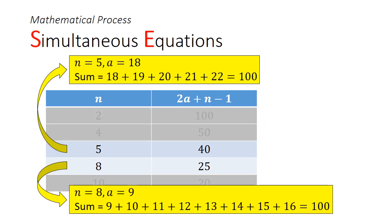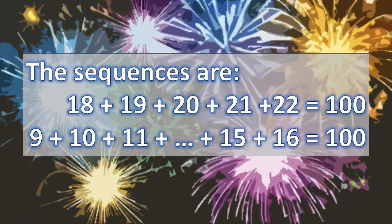So all that remains to be done is to solve the pair of simultaneous equations to find the respective values of a. We can solve for n equals 5, a equals 18 to get one possible sequence, and n equals 8, a equals 9 to find the second possible sequence. So the sequences are 18 plus 19 plus 20 plus 21 plus 22 will give you 100, 9 plus 10 plus 11 and so on until 16 will also give you 100. Did you get the answer?